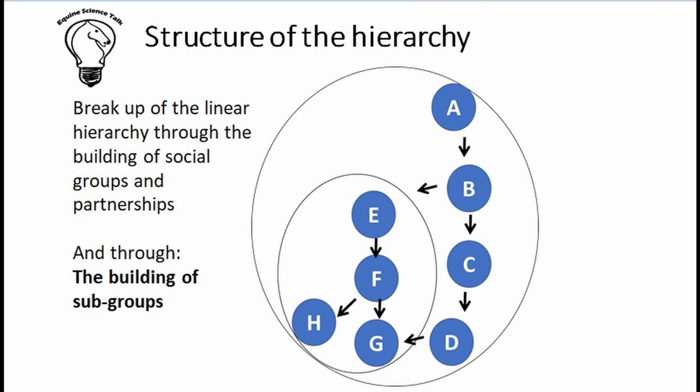As groups get bigger, eventually they split. As you can see in the diagram, this group had become so big that two subgroups formed — two harem groups. The higher-ranking group dominates over the lower-ranking group and takes priority when it comes to resources such as food and water. Individual horses may still switch between these groups — as mentioned earlier, around 15 percent of group members may move between the two groups. The stallions in each group usually take a pretty dim view of this; in the photo you can see a stallion driving a switcher away from the group.